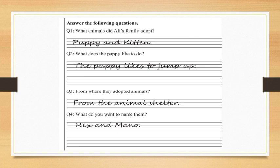Okay students, now you have studied your questions. You will answer the following questions. What animals did Ali's family adopt? Ali's family adopted a puppy and a kitten. Next, what does the puppy like to do? The puppy liked to jump up. From where they adopted animals? From the animal shelter.